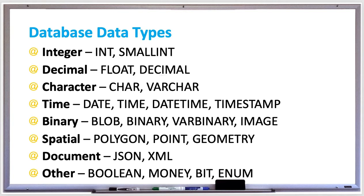You can store document data types using either JSON or XML as a data type. And a few other noteworthy data types are boolean, money, bit, or enum for enumerations.